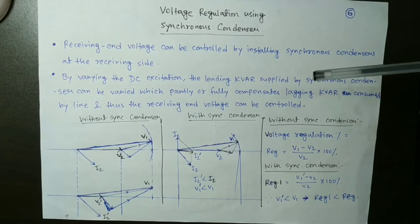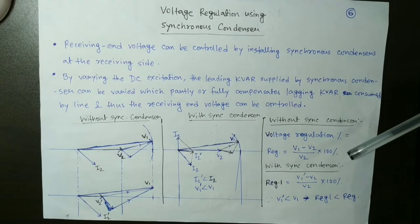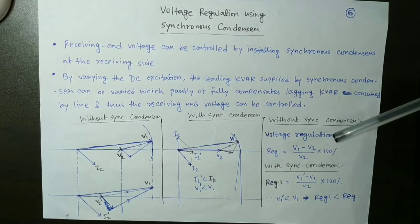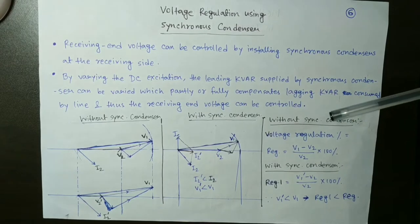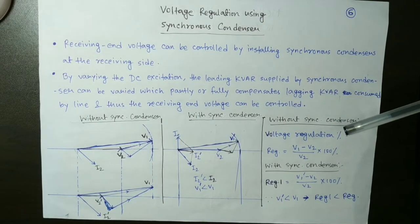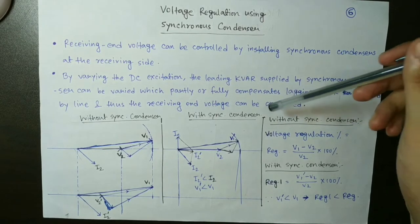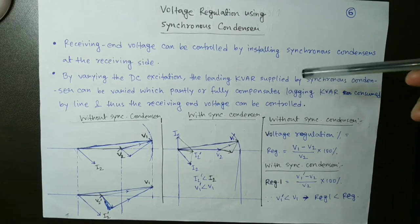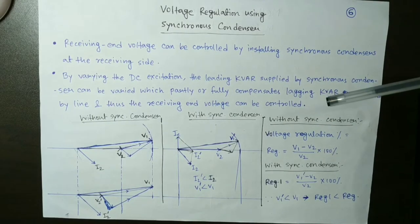By varying the DC excitation you can control your leading reactive power, which can either partly or fully compensate the lagging reactive power consumed by the transmission line. Hence the voltage drop in the line can be decreased, which means the current drawn by the load will also be reduced, and the receiving end voltage can be controlled and improved.